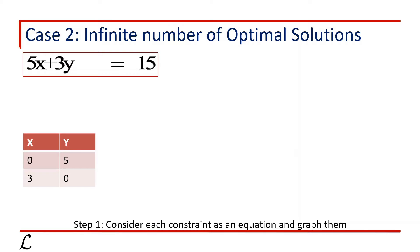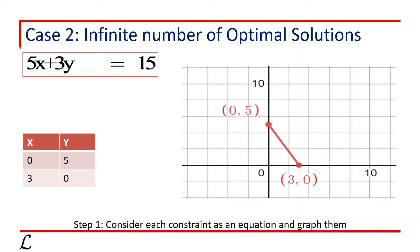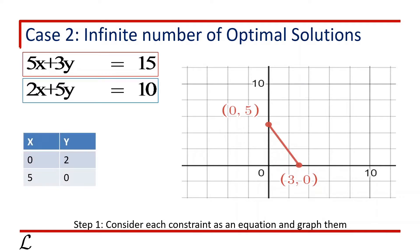Now we can draw a line connecting these two points, which you can see on the screen. Now consider the second equation, 2x plus 5y equals to 10, with respect to the constraint 2x plus 5y less than or equals to 10. If we put x equals to 0, y will be 2, so the first point is (0, 2). And if we put y equals to 0, x will be 5, giving us the second point (5, 0).